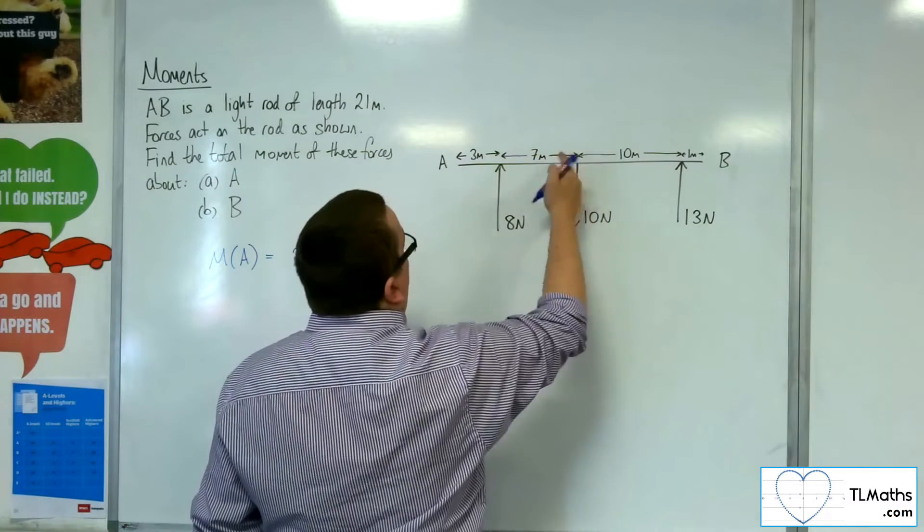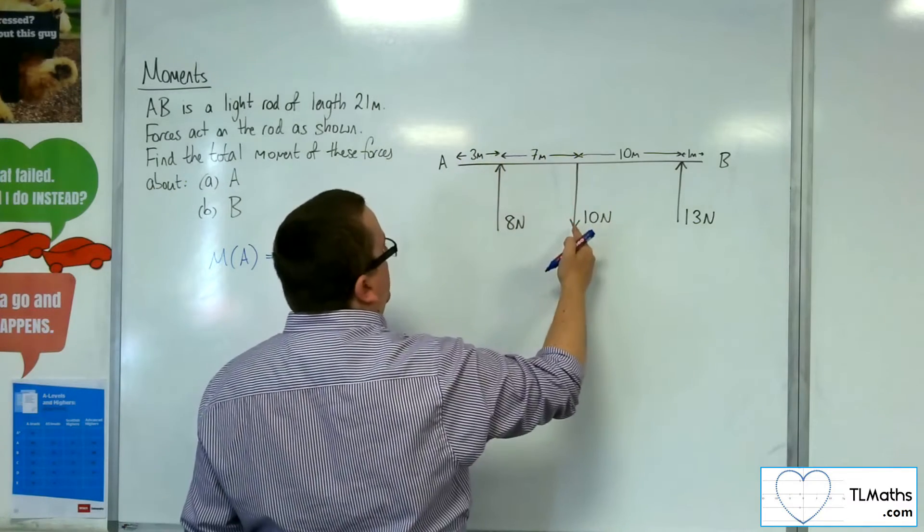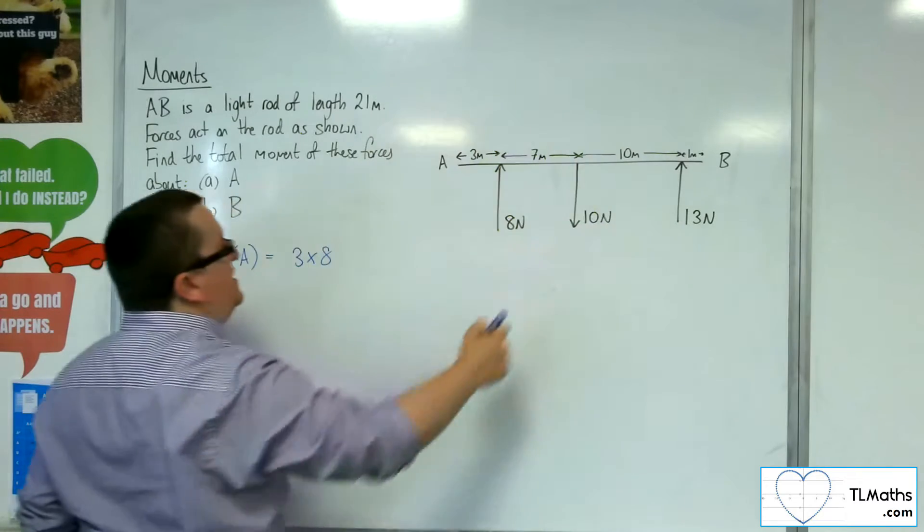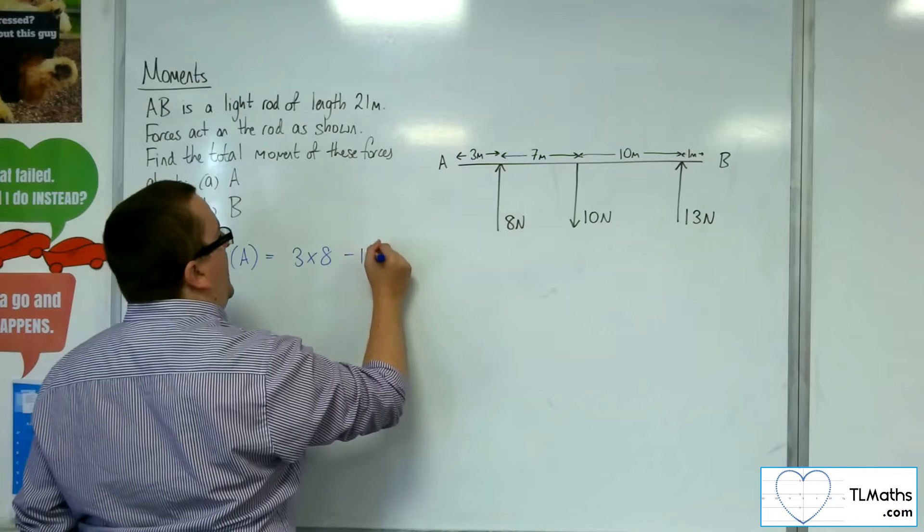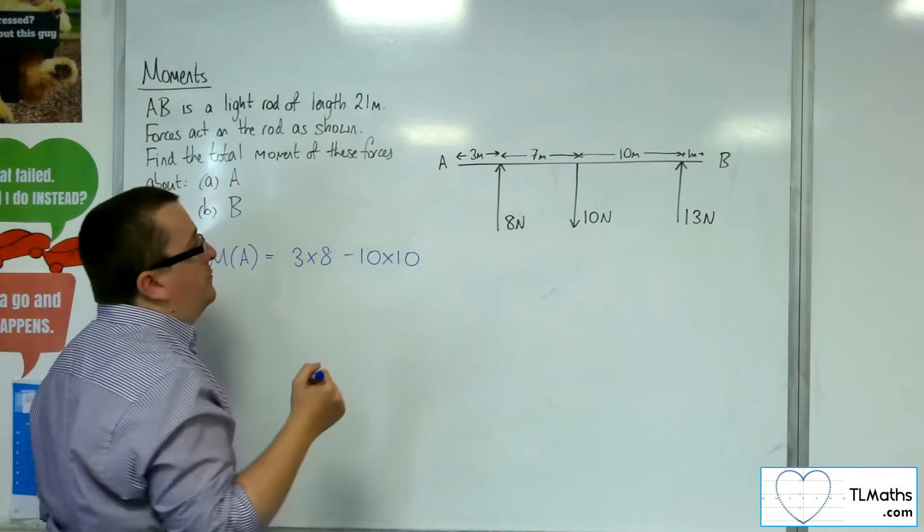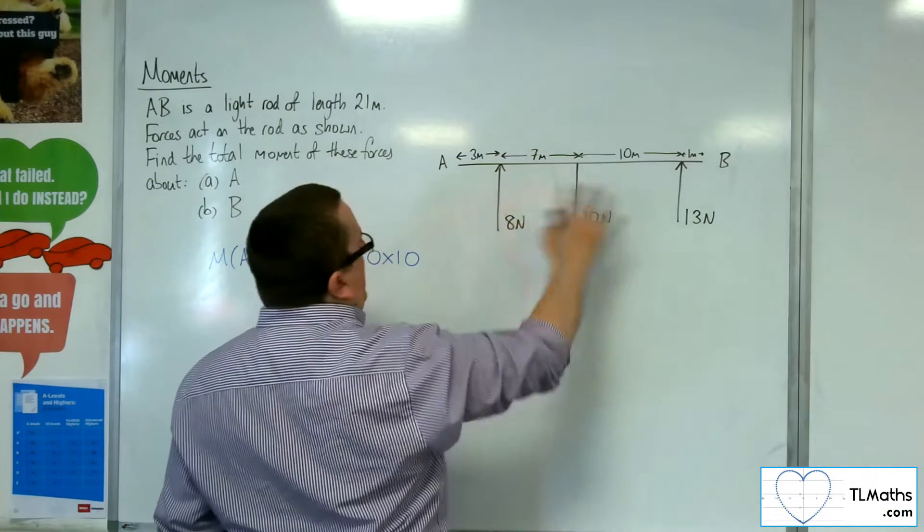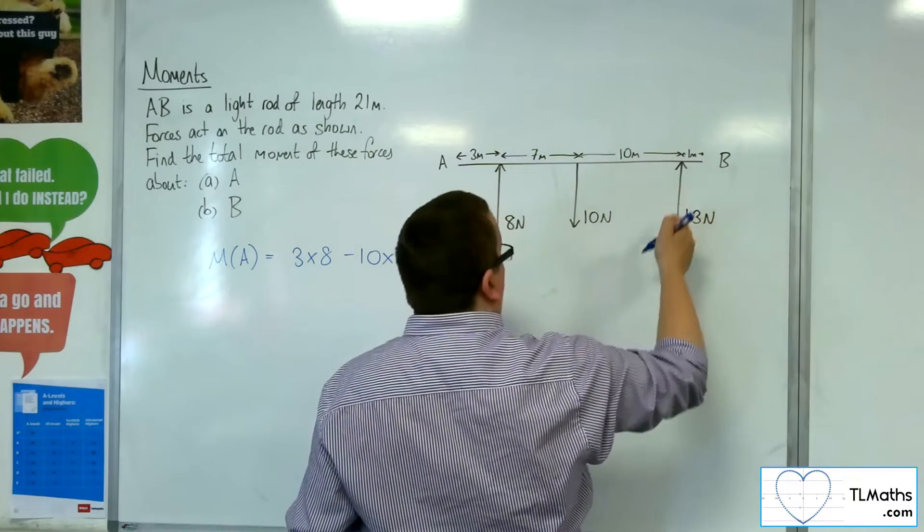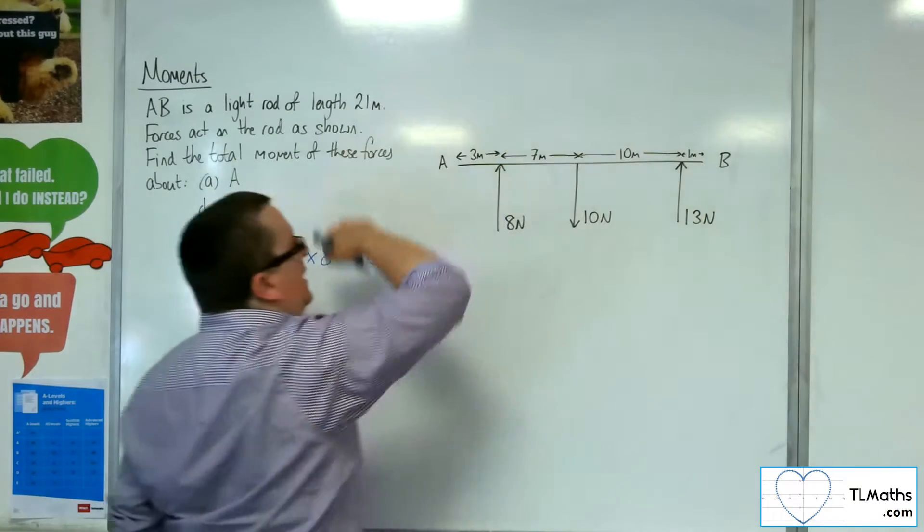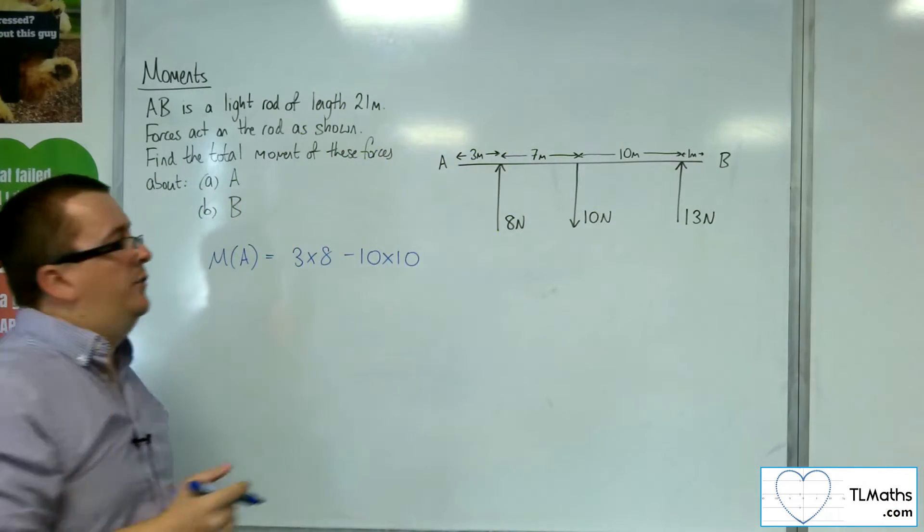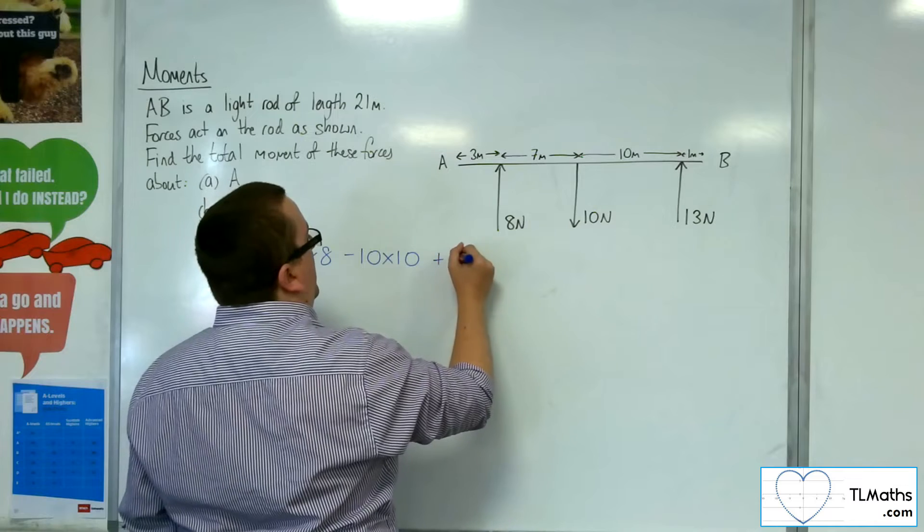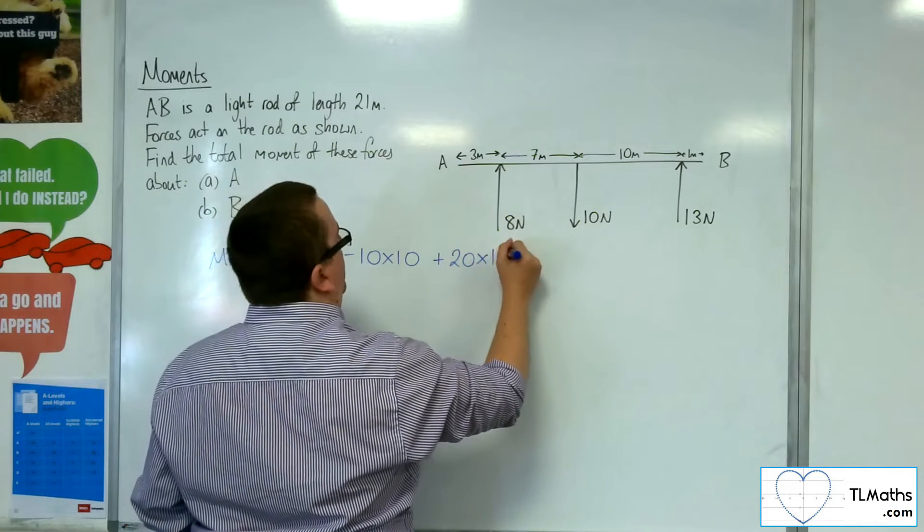Now, this force is 10 meters away and is being pushed in a clockwise motion, so it's negative. So we've got take away 10 lots of the force 10. Now, 20 meters away is this other force, the third force, and that's being pushed around in an anti-clockwise motion, and so it's positive. So we've got plus 20 lots of 13.